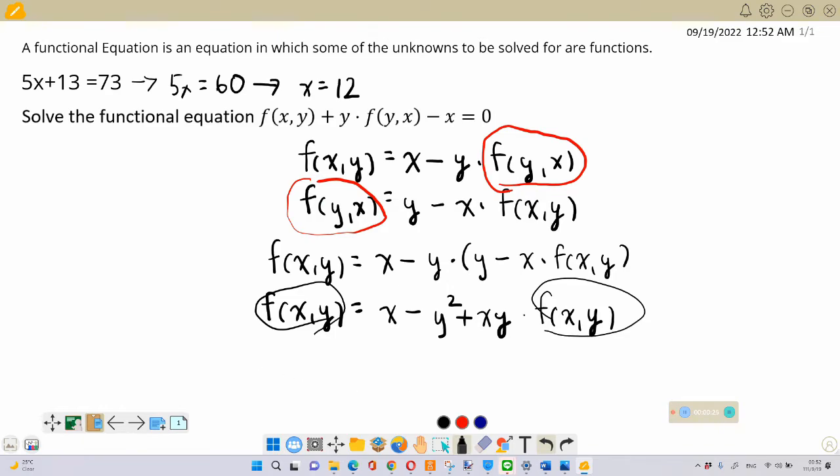I can move the term with f(x,y) to the left hand side so that I will have f(x,y) minus xy times f(x,y) and this will be equal to x minus y squared.